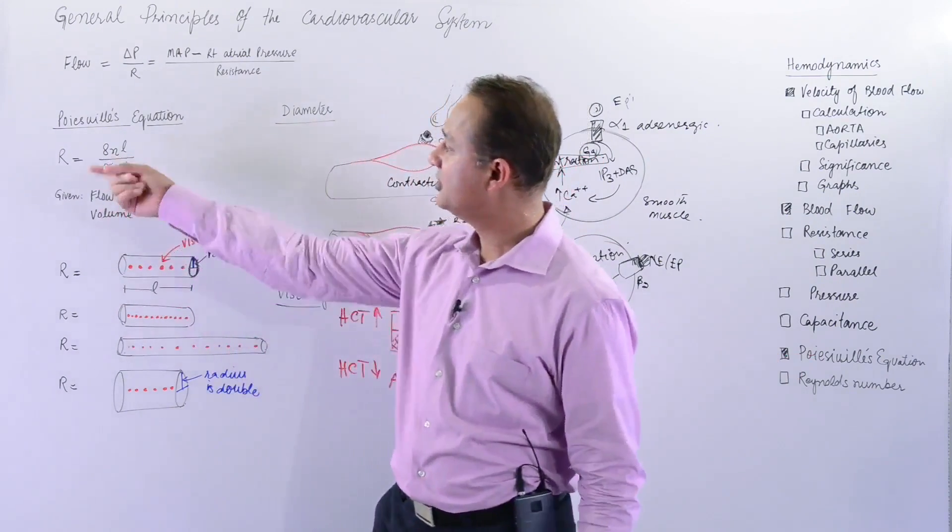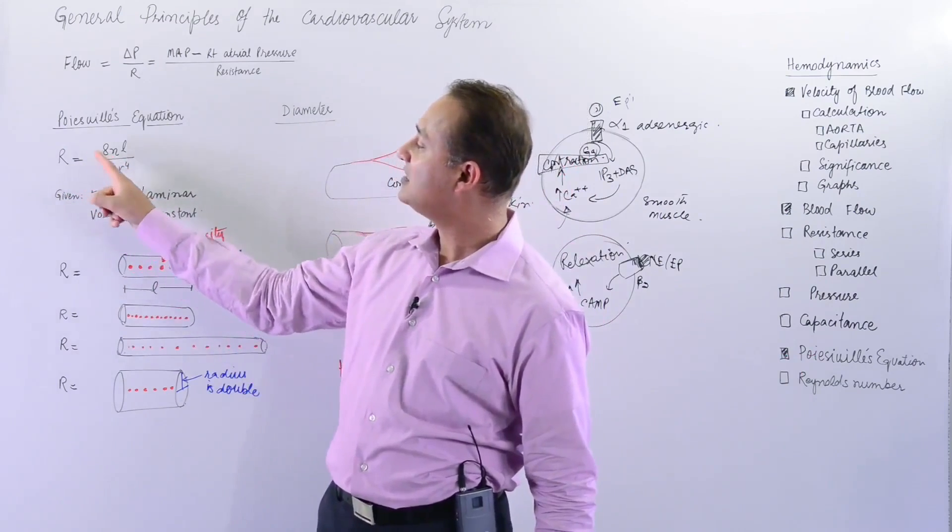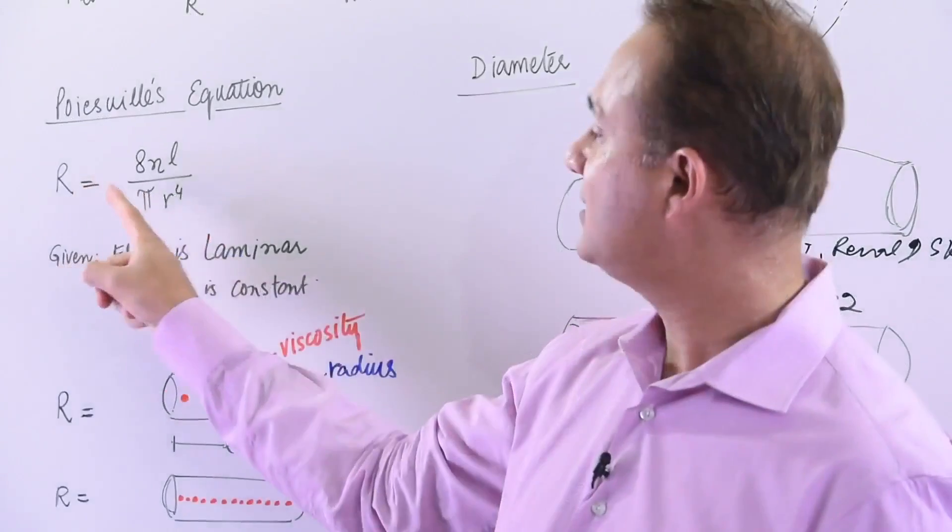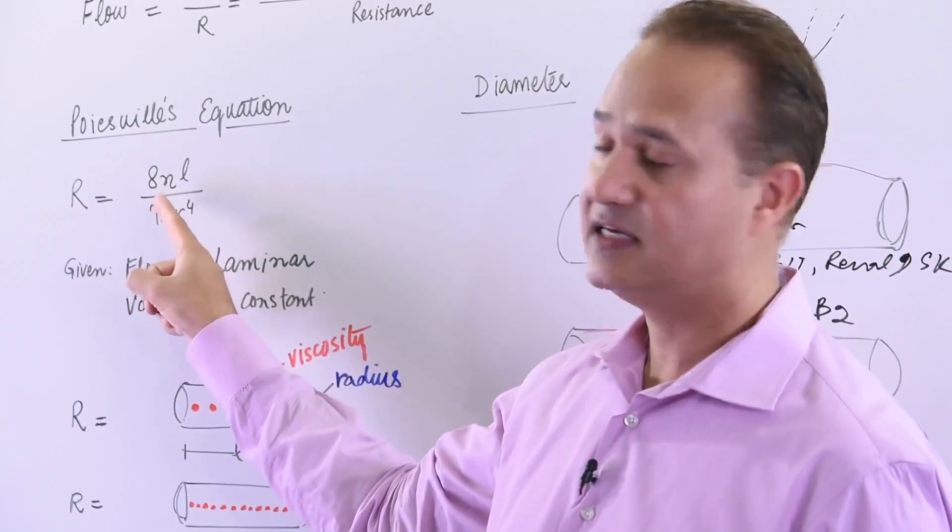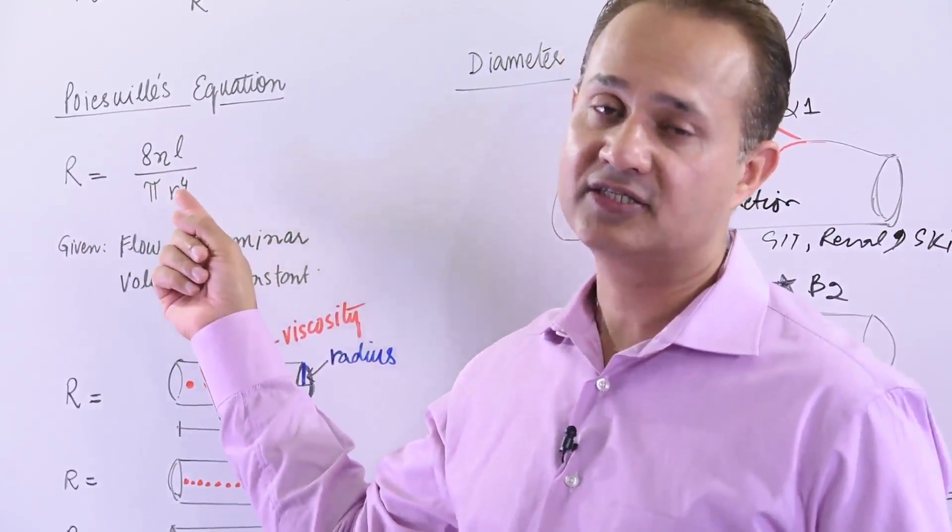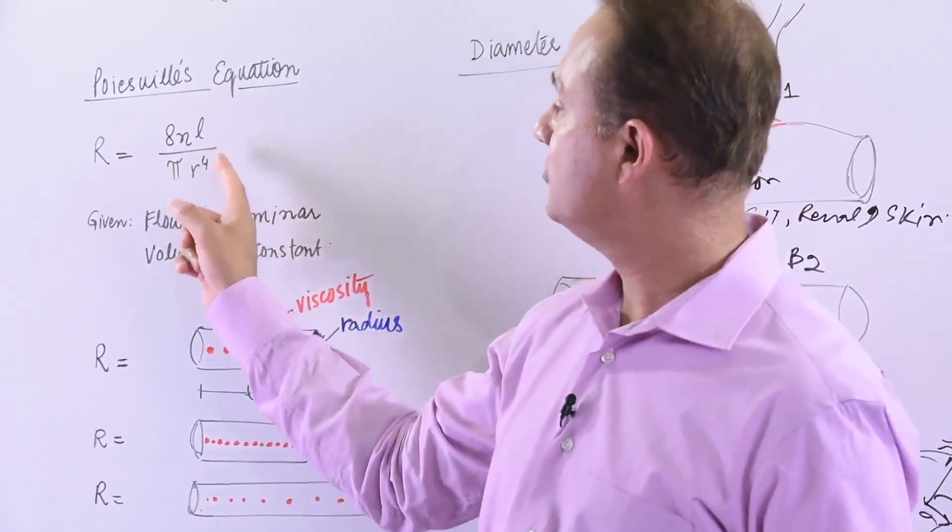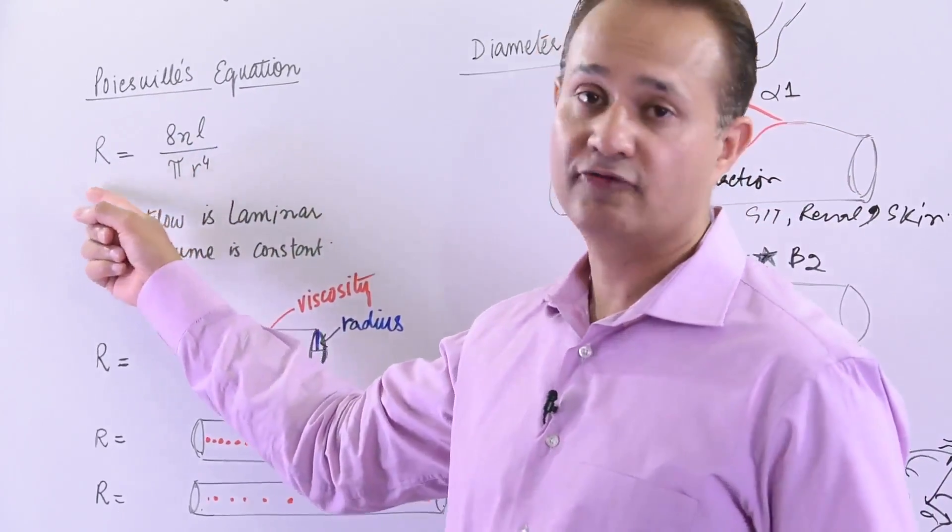Let us look at that equation here. Poiseuille's equation says resistance equals eight, the product of eight viscosity, this η is viscosity, length divided by pi and radius raised to power four. That is the value. Once you calculate that, you get the value of the resistance.